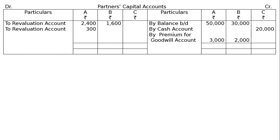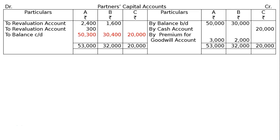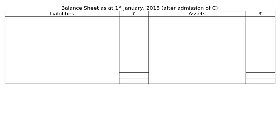A will give ₹300 to the firm — this is a book adjustment, appropriation from A's capital. So debit ₹300 from A's capital to revaluation account. Balance carried down: A = ₹50,300, B = ₹30,400, C = ₹20,000. After this, proceed to the balance sheet.